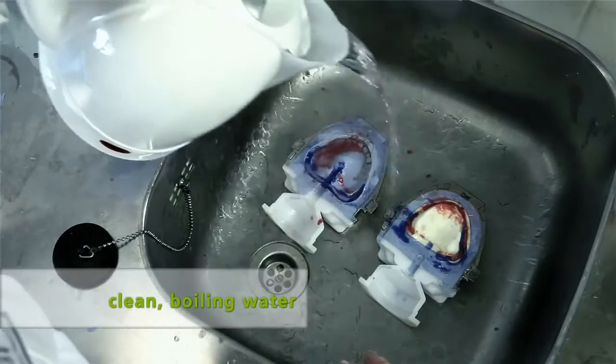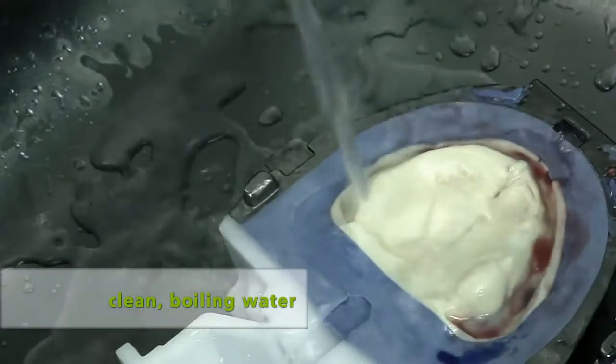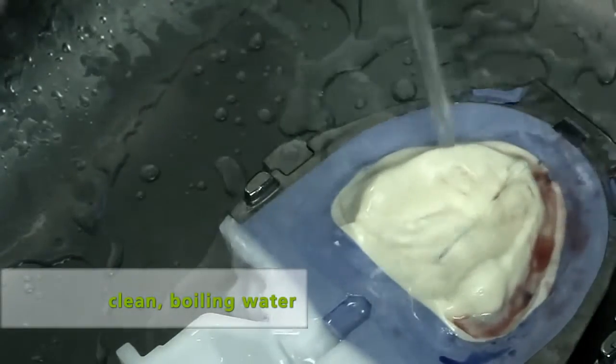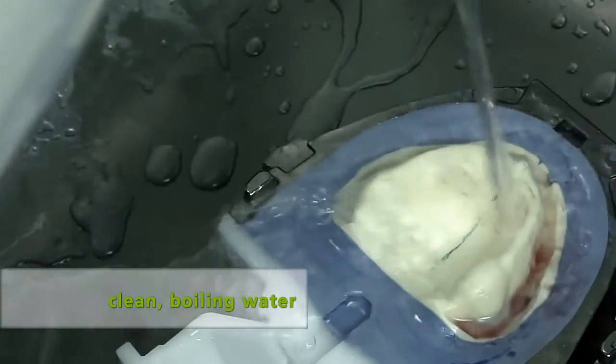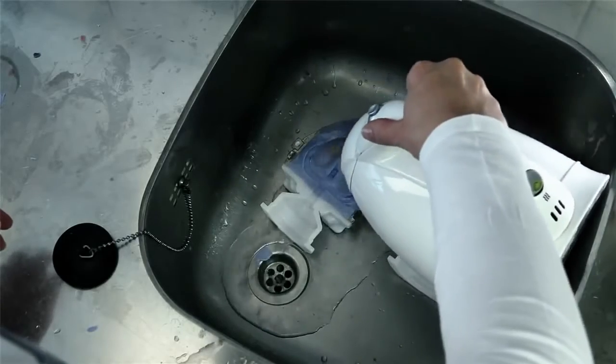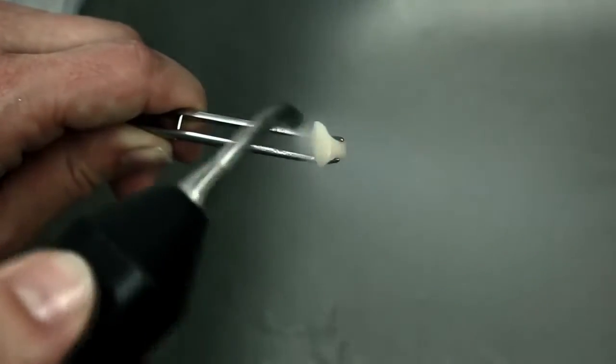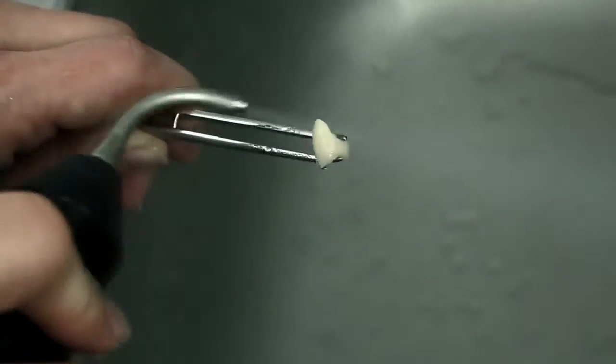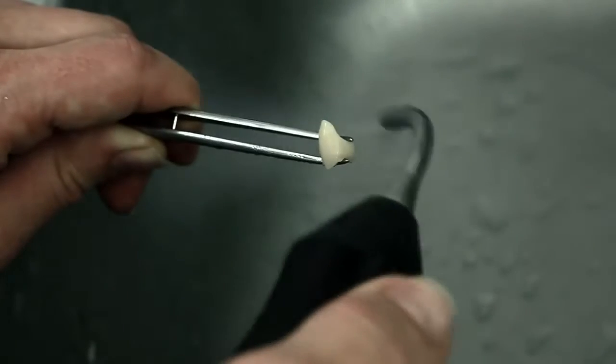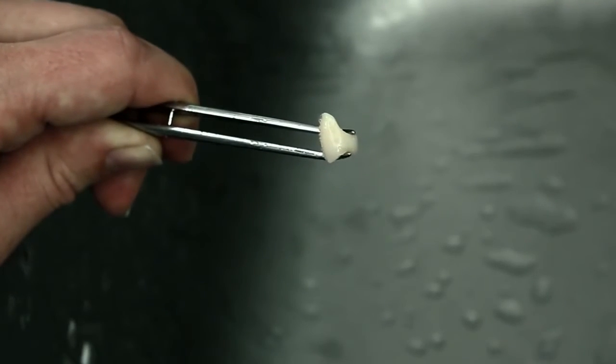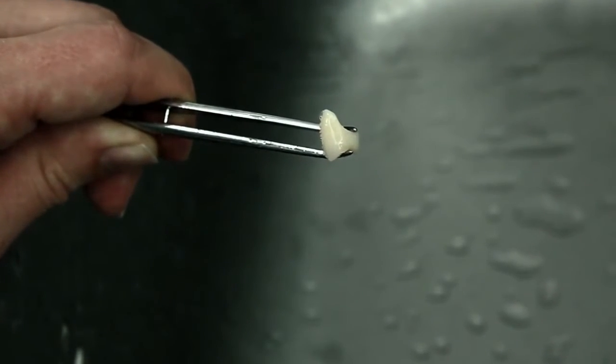Now thoroughly boil out the wax residue at the inner surfaces with clean, boiling water. Use only clean water without additives such as wax solvents or cleaning agents. For an optimum bond between the resin teeth and the denture base resin, the cervical areas of the teeth as well as the basal tooth surfaces must be absolutely free of wax.